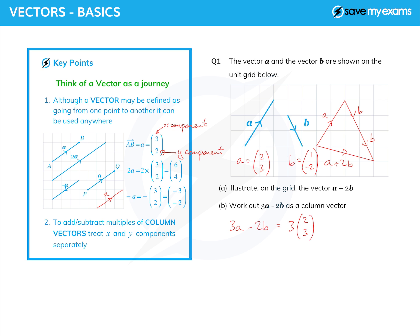So 3a minus 2b is three lots of (2, 3) minus two lots of (1, -2). And then, as I say in the blue box and key point two there, I just treat the two components separately. So I do three times two minus two times one to get the x component.